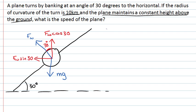So let's start by considering the forces that are acting vertically. If we know that the plane maintains a constant height above the ground, if it's flying level, then the forces must be balanced that are acting on it vertically. So that tells us that the vertical component of the lift must be equal to the weight. And we can rearrange that to find an expression for the lift force, which will be mg over cos 30.